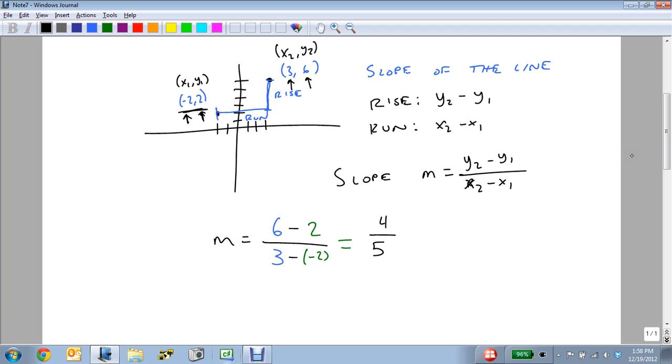Now notice if I went with it the other way, if I decided to do the 2 first, then we'd be subtracting the 6 second, which means the minus 2 is going to come first on bottom. And when we subtract, we're going to subtract the 3. And 2 minus 6 is minus 4. And minus 2 minus 3 is minus 5. And a negative divided by a negative is a positive.